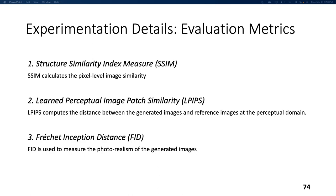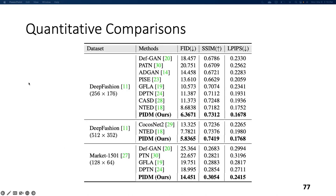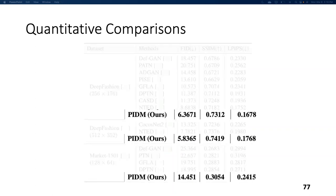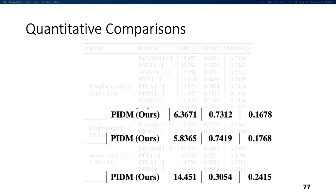Looking at the quantitative comparisons across datasets, PIDM can be seen to outperform other state-of-the-art methods on all three metrics — FID, SSIM, and LPIPS — meaning PIDM generates the most realistic images while also being most aligned with both pose and style simultaneously.